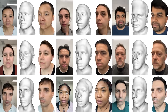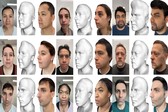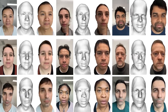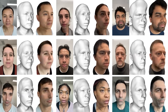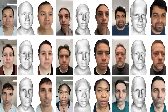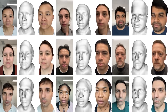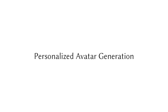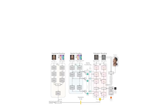Here we show more examples of neutral face reconstruction. For each example, we show the input image, the reconstructed face geometry, and the rendered mesh with the aggregated texture. The neutral face geometry and texture are then used as conditioning inputs to the universal prior model to build the personalized model.